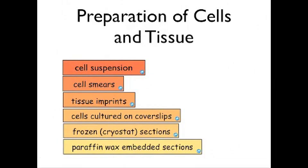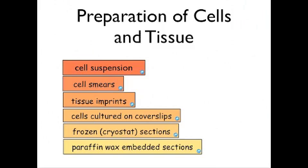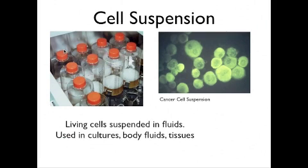In this video, I'm going to be talking about the different types that we can prepare cells and tissue to observe them under the microscope. These are the different types: cell suspension, cell smears, tissue imprints, cells cultured on coverslips, frozen or cryostat sections, and paraffin wax embedded sections. These are the ones I'm going to be talking about, although I might not go into much detail on some of them.